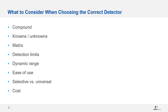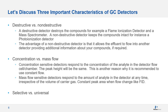Let's discuss three important characteristics of GC detectors. The first is the difference between destructive versus non-destructive detectors. A destructive detector destroys or decomposes your target after detecting, while a non-destructive detector keeps the components intact. The advantage of the non-destructive detector is that it allows the effluent to flow into another detector, providing additional information about your components if required.